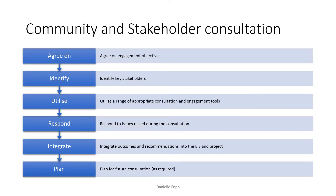Community and stakeholder consultation — what are we looking to follow through this process? We need to agree on the engagement objectives: what are you looking to achieve from the engagement? You need to identify the key stakeholders for the project. The key stakeholders will vary with each project — they will not be the same. They may be variations of the same types of groups, but for each project it's important that you identify key stakeholders so that when you conduct your consultation you're not missing anyone out.